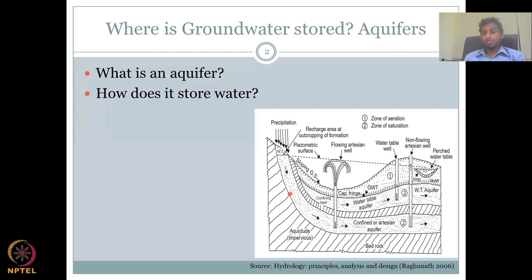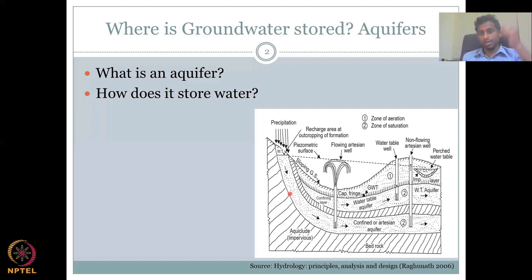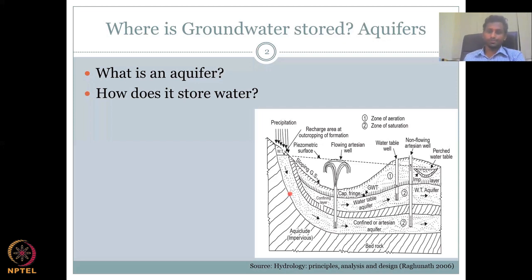How does it store water? There are void spaces and those spaces store water, but the water also has to stay there for a longer time. If it keeps moving down, then there is no point in calling it an aquifer — it should be relatively slower. Plants can take it up, trees can take it up, farmers can take it for their agricultural fields, or even your domestic pumps can take it for drinking water. Even government schemes are there for drinking water purposes.